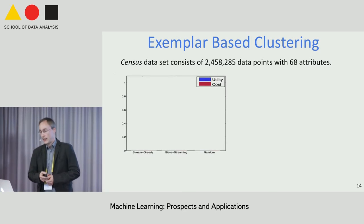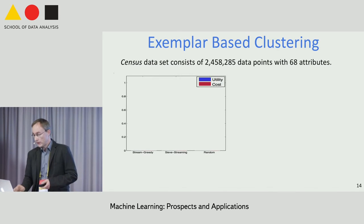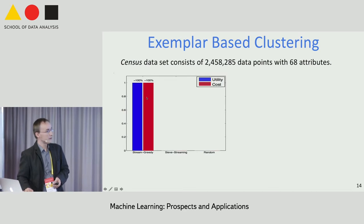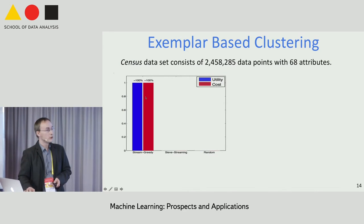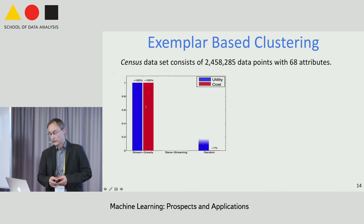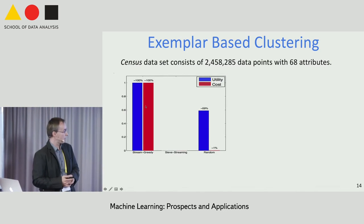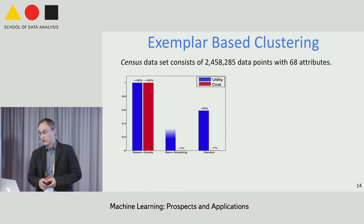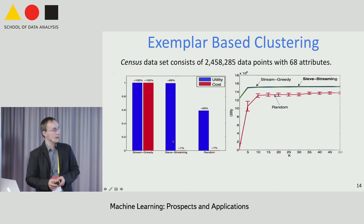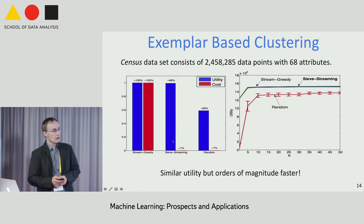Here are some numerical experiments on several datasets, comparing against the stream-greedy algorithm—the previous benchmark for streaming submodular maximization—with function evaluations normalized to 100%. Simply picking points at random is very fast but gives little utility. Using the sieve streaming algorithm, you get almost all the utility at a tiny fraction of the cost. Similar effects are seen for different values of k.